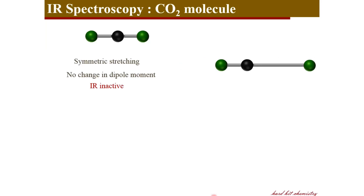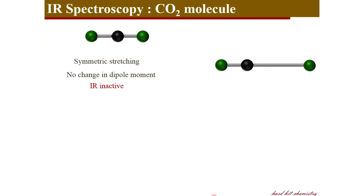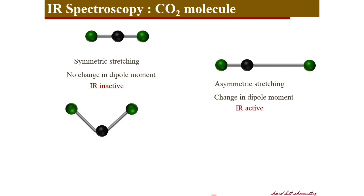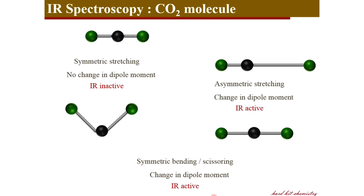The next mode is asymmetric stretching, where when one bond is compressing, the other is getting stretched. This non-uniform, asymmetric mode of vibration gives rise to a change in dipole moment, and therefore this mode is IR active. The third mode of vibration is a bending vibration where the bond angle is changing — this is symmetric bending, also called scissoring. During this scissoring motion, the dipole moment of the molecule changes, making this mode IR active. The fourth mode is bending out of plane, and during this vibration the dipole moment also changes, so this vibration is also IR active.